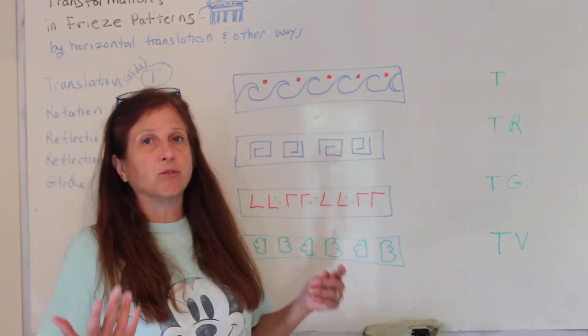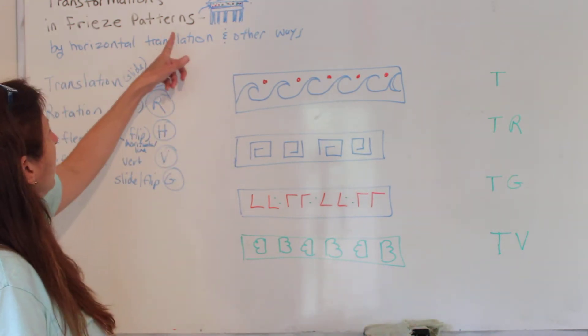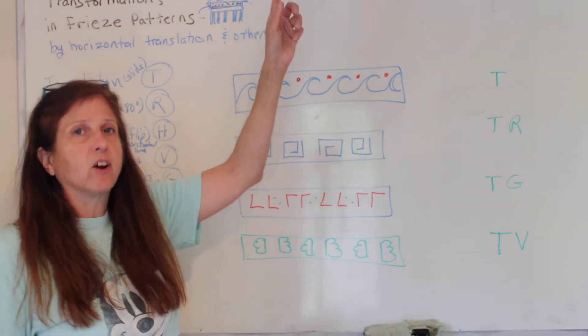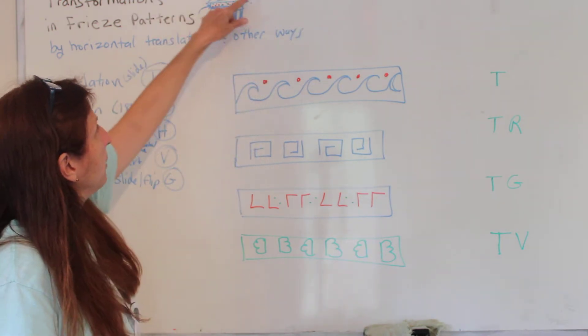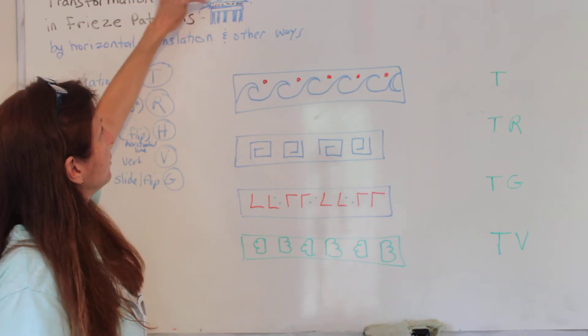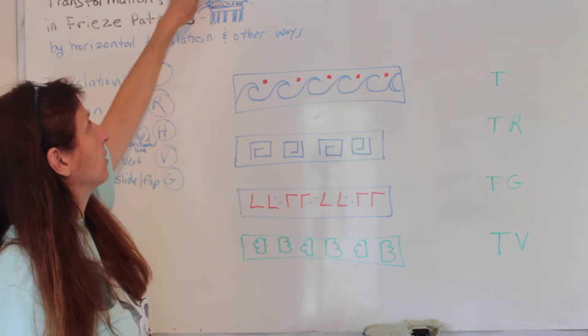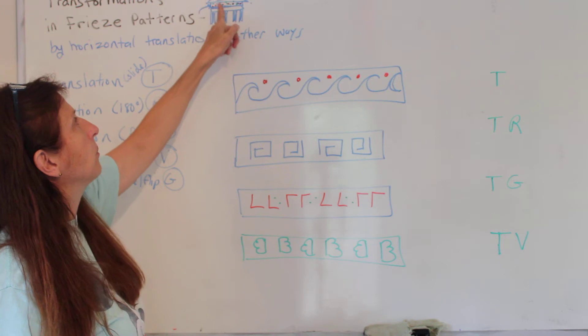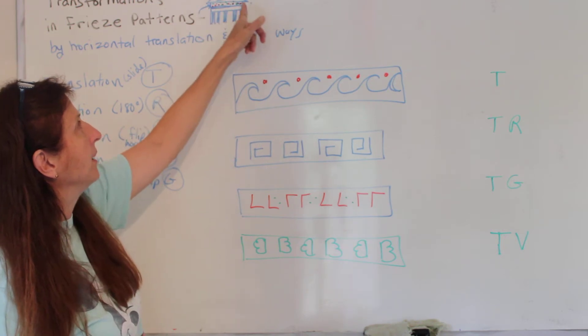In particular, they wanted to talk about frieze patterns. A frieze pattern came from ancient Greek architecture that they would decorate their buildings, it was supposed to be all pretty, and then underneath the triangle part, they didn't decorate the triangle part, but underneath they would do a repeating pattern right in there.